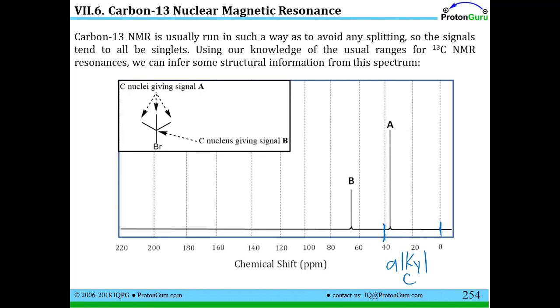And we have another set of carbon atoms that gives a signal B, and that's between 60 and 80. That's probably a carbon next to some electronegative atom. And this is the actual compound I used to simulate the spectrum here. You have the carbon nuclei giving you signal A, are these three that are chemically and magnetically equivalent, and then you have this carbon B that gives you the signal B.